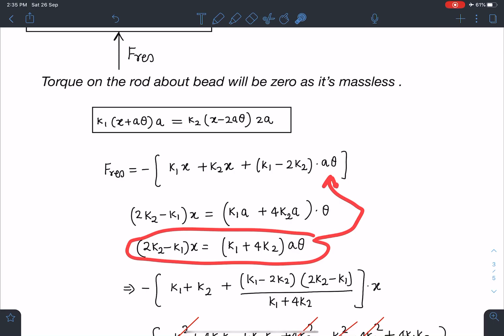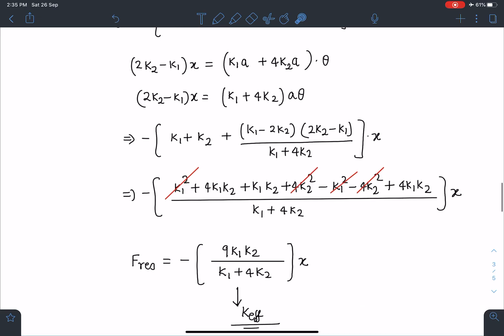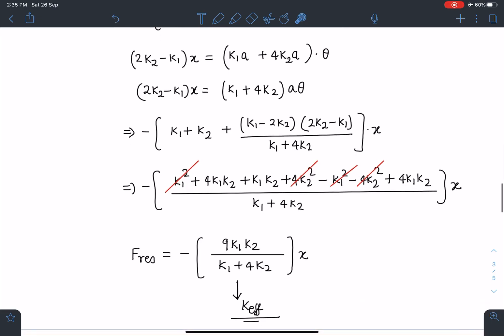And from here I'll be replacing this a·theta directly in this equation, so that my entire equation will become in terms of x, and which will lead me to the standard equation of simple harmonic motion. When I substitute and simplify, surprisingly lot of terms are getting cancelled here. Very nice terms are coming, and I am going to get this F_restoring as minus times 9k₁k₂/(k₁ + 4k₂) times x.